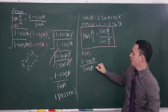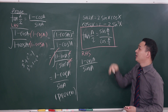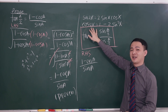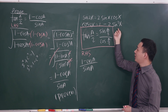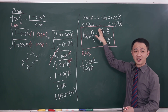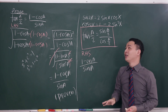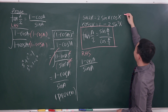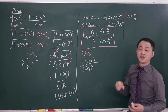Starting from the right-hand side, I have (1 minus cos a) over sine a. I need to substitute cos a and sin a using double angle formulas. For cos 2x, I choose the form 1 minus 2 sine squared x — because I want to eliminate the 1 on the numerator. The other form, 2 cos squared x minus 1, would leave a negative 1, which isn't helpful. I then let x equal a over 2 and substitute into both formulas.